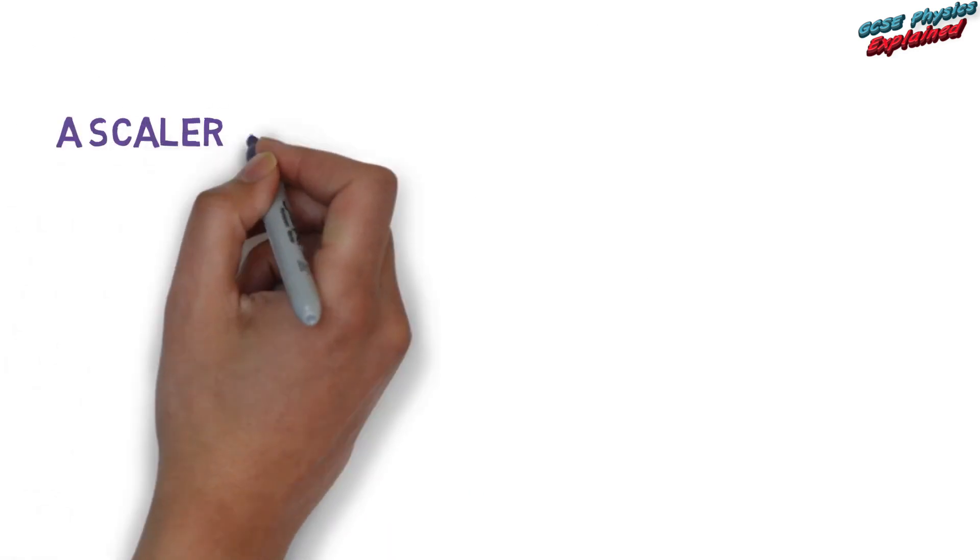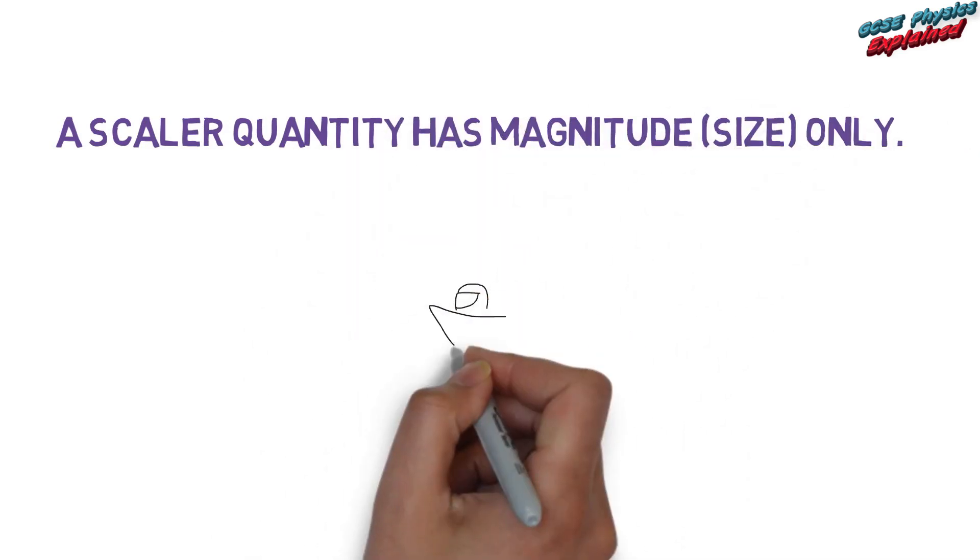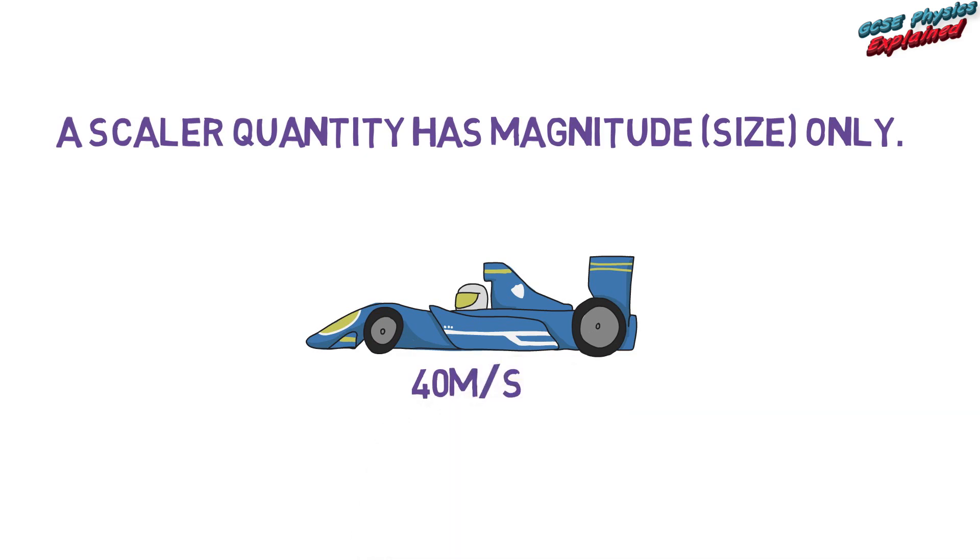A scalar quantity has magnitude or size only. For example, 40 meters per second.